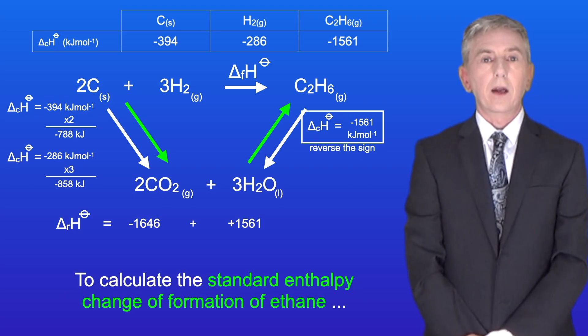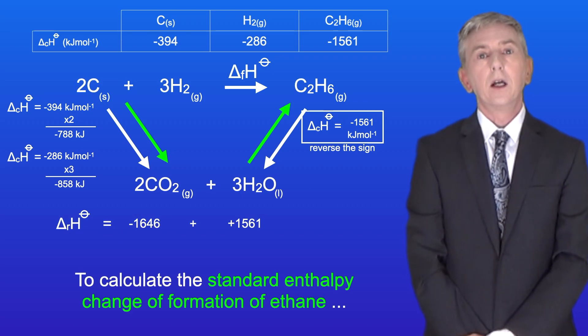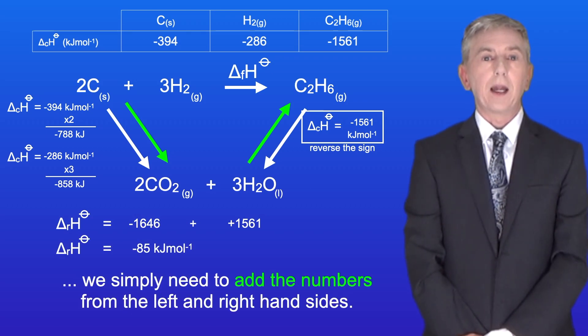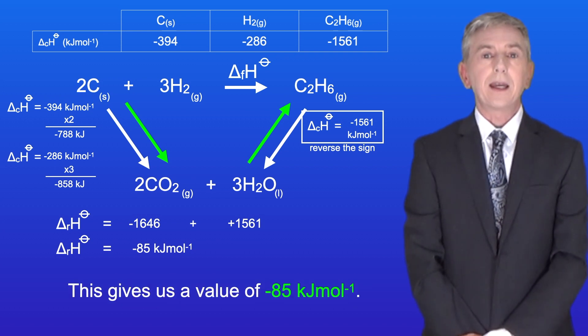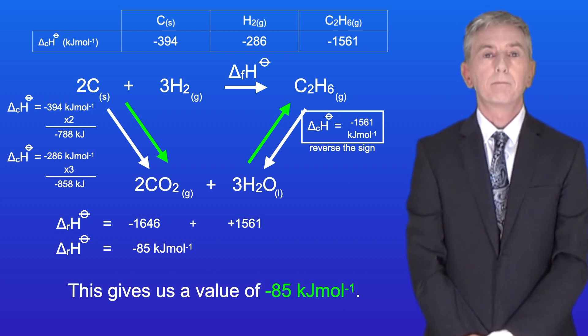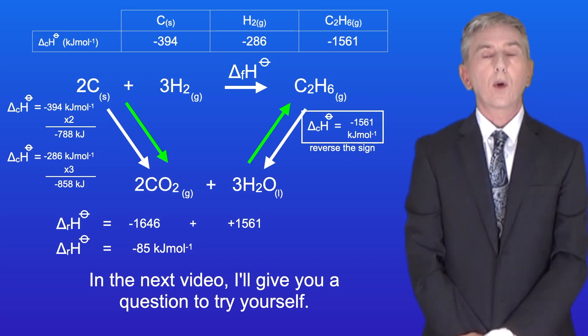To calculate the standard enthalpy change of formation of ethane, we simply need to add the numbers from the left and right-hand sides. This gives us a value of -85 kJ/mol. In the next video, I'll give you a question to try yourself.